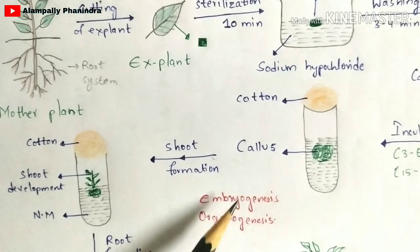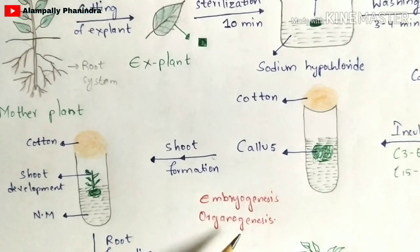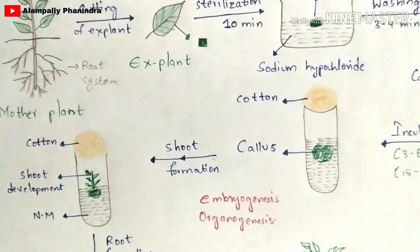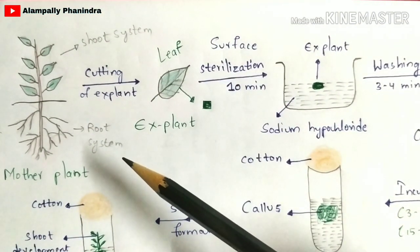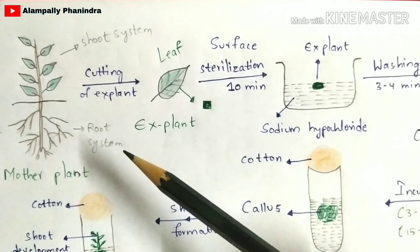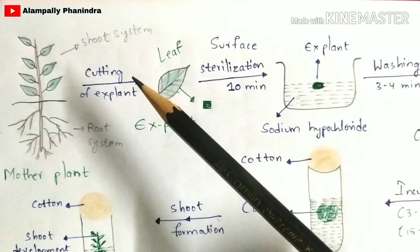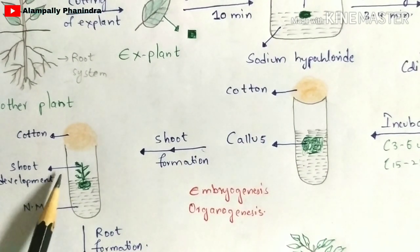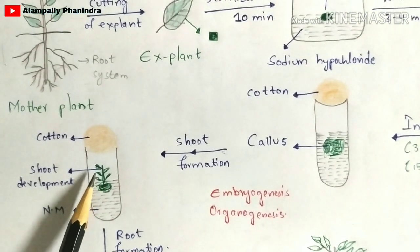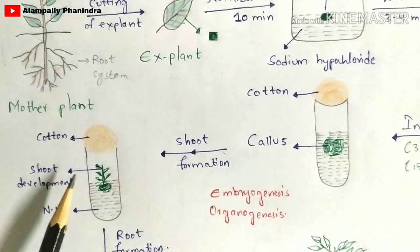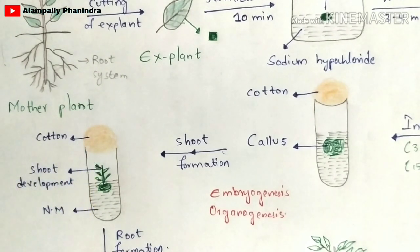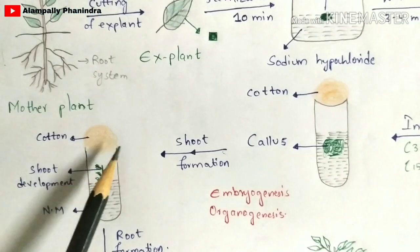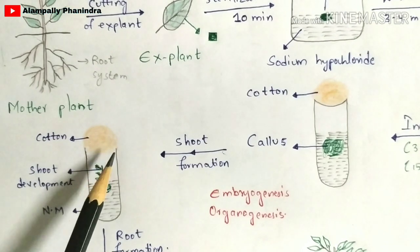After callous formation, the callous undergoes shoot formation. The shoot system includes the development of leaves, meristem, and all the parts present above the soil. Remember, the cotton should not be removed throughout the experiment, because if you remove it, there will be immediate entry of pathogenic bacteria. Instead of cotton, you can also use a lid to close the test tube.